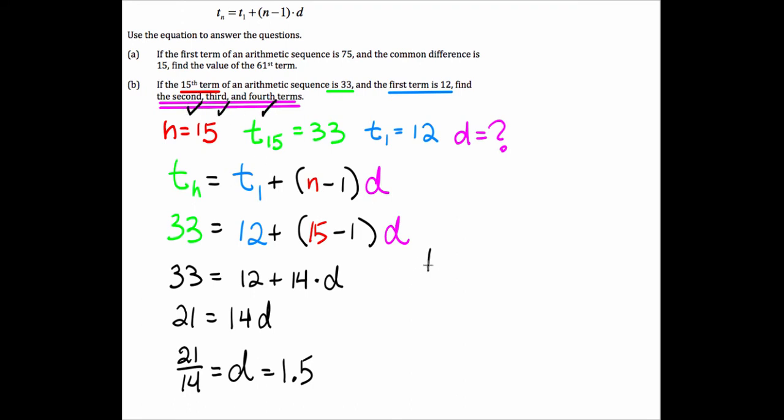What we're looking for are the second, third, and fourth terms. We know that the first term is 12. So if we start with 12 and add 1.5 three times in a row, we will have all of the terms.